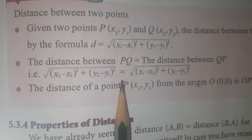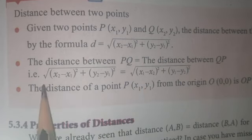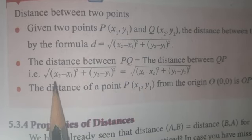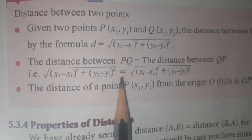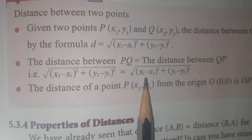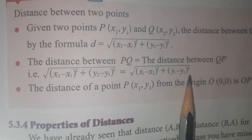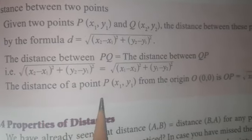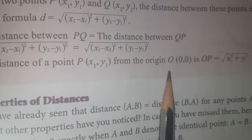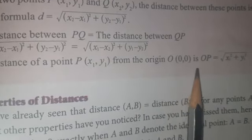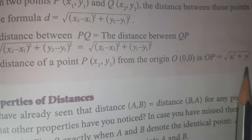The distance between P and Q is equal to the distance between Q and P — both distances are equal. That is, the square root of (X2-X1)² + (Y2-Y1)² equals the square root of (X1-X2)² + (Y1-Y2)². The distance of a point P(X1, Y1) from the origin (0, 0) is OP, equal to the square root of X1² plus Y1².